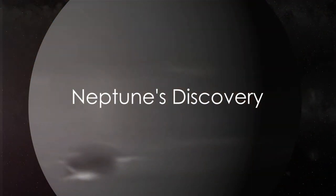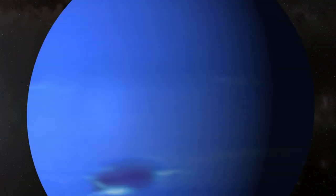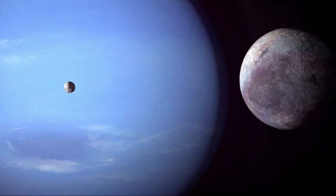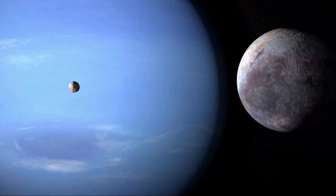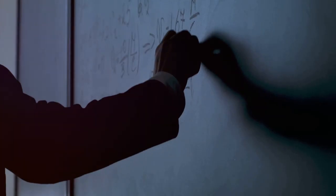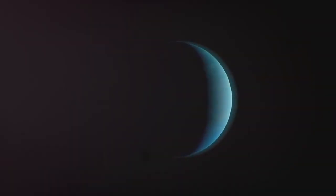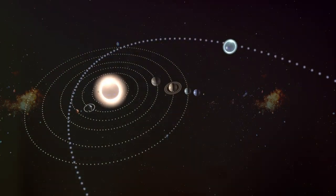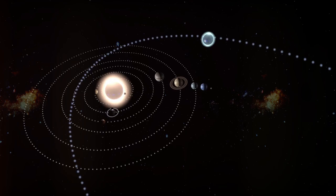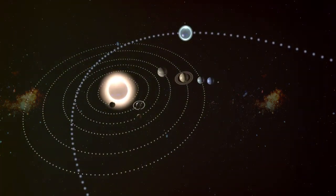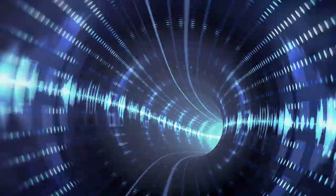The discovery of Neptune is a testament to the power of mathematical prediction. This far-off world wasn't stumbled upon by mere chance or through a telescope's lens. Instead, it was the product of calculations and precise predictions. The story begins with a French mathematician named Urbain Le Verrier. In the mid-19th century, Le Verrier noticed that Uranus wasn't following its predicted path. Trusting in the laws of gravity, he hypothesized that another unseen planet was influencing Uranus's orbit.